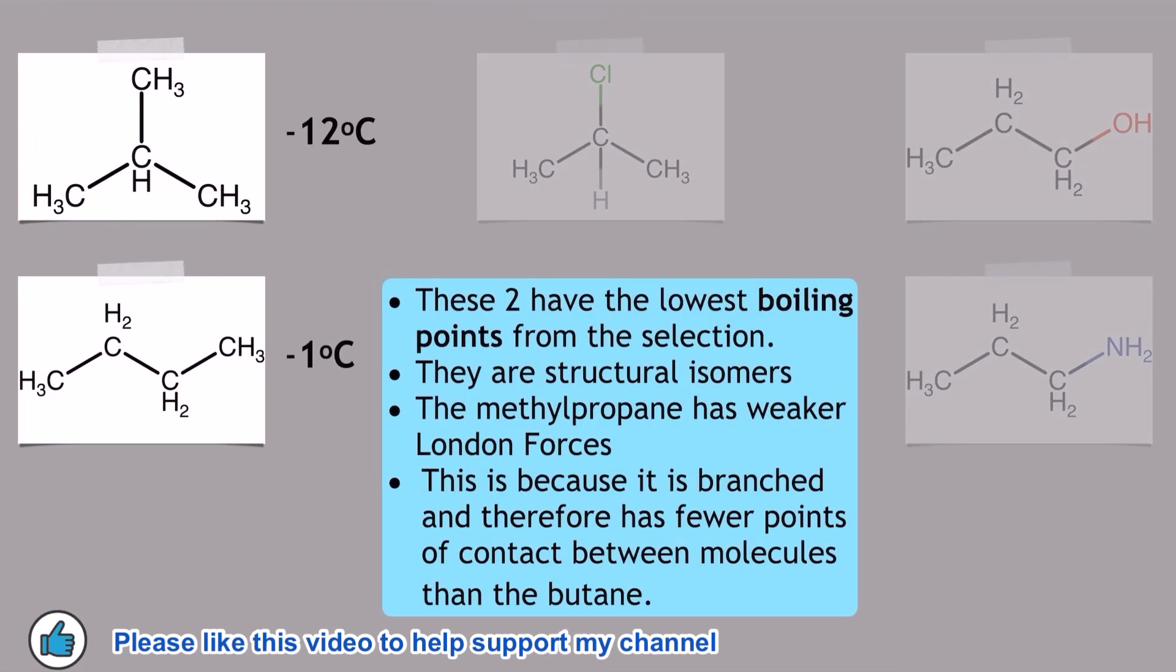I'm going to kick off over here on the left hand side with these alkane structures, and these have actually got the lowest boiling points from the selection currently on screen. These two molecules are structural isomers of each other. We've got methylpropane at the top, and just below it we've got butane.